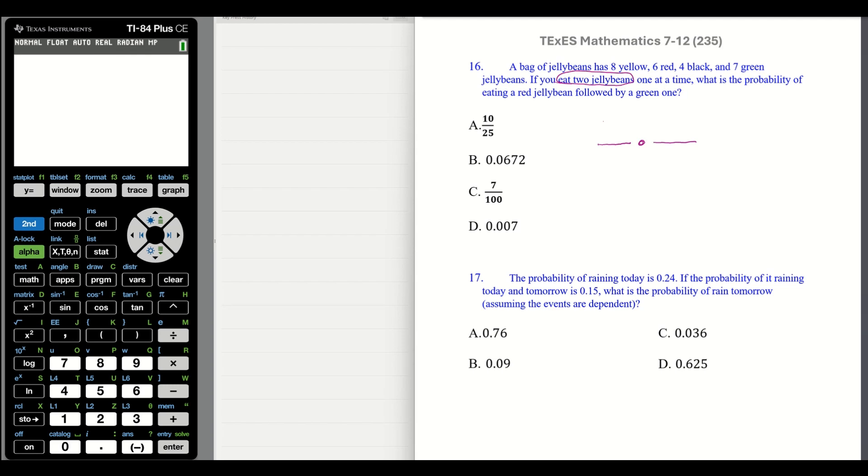Okay. First event, we need to add up our jelly beans first. Let's see. Six, ten, eight, and seven is a total of 25 jelly beans. Okay. And the first one we're going to eat is going to be red. Six. Okay. We have six, and we're going to eat, so our total outcomes changes to 24. Because we ate. And then we're going to look at eating green first. Seven.